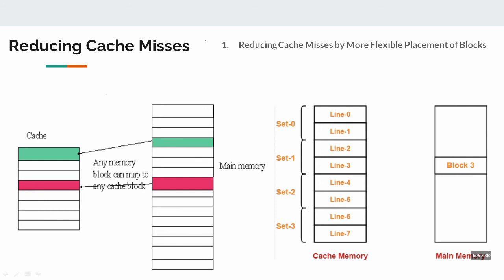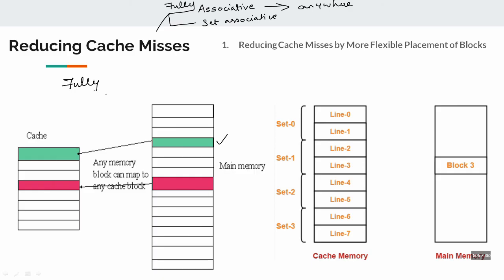Now we are going to look at how to improve cache performance. There are two options. The first option is to reduce cache misses. There are two different techniques. The first is Direct Mapping. The second is Fully Associated Mapping. In Fully Associated Mapping, any data can be placed anywhere — any memory block can be mapped to any cache block.